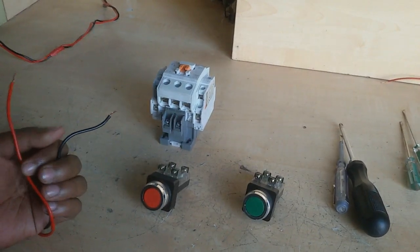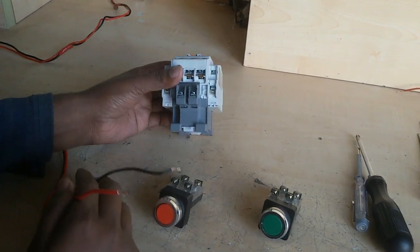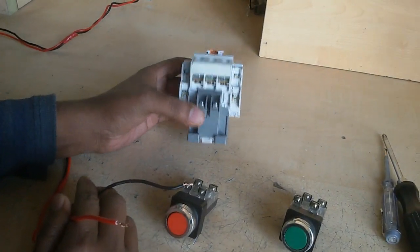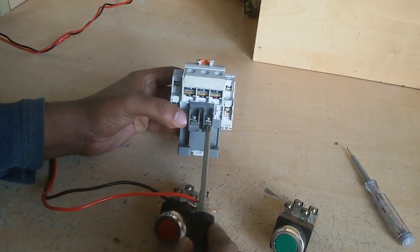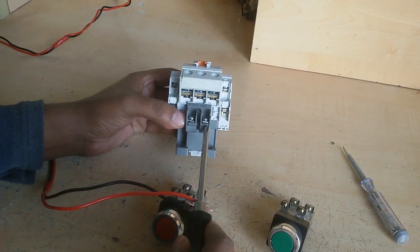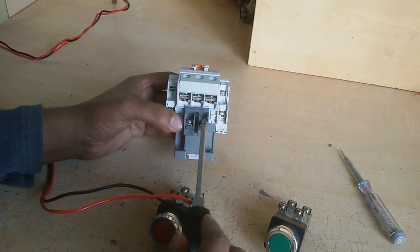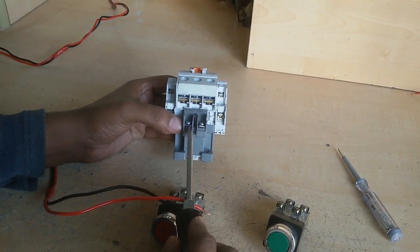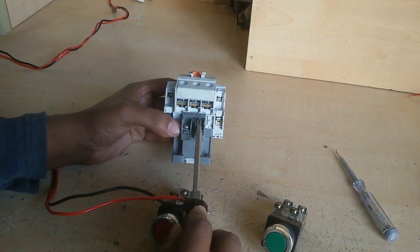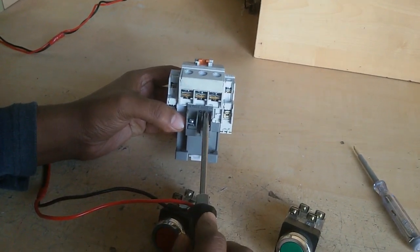Now I connect the neutral into magnetic contactor. This magnetic contactor has a holding coil. This holding coil has two terminals. One is labeled A1 and other is A2. In A1 and A2 terminal need 220 volt AC.